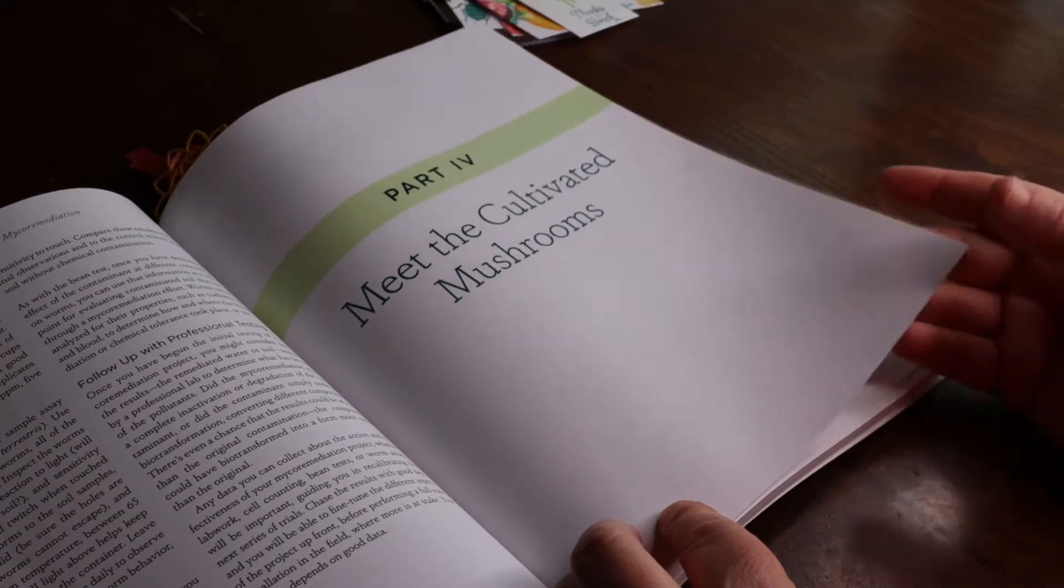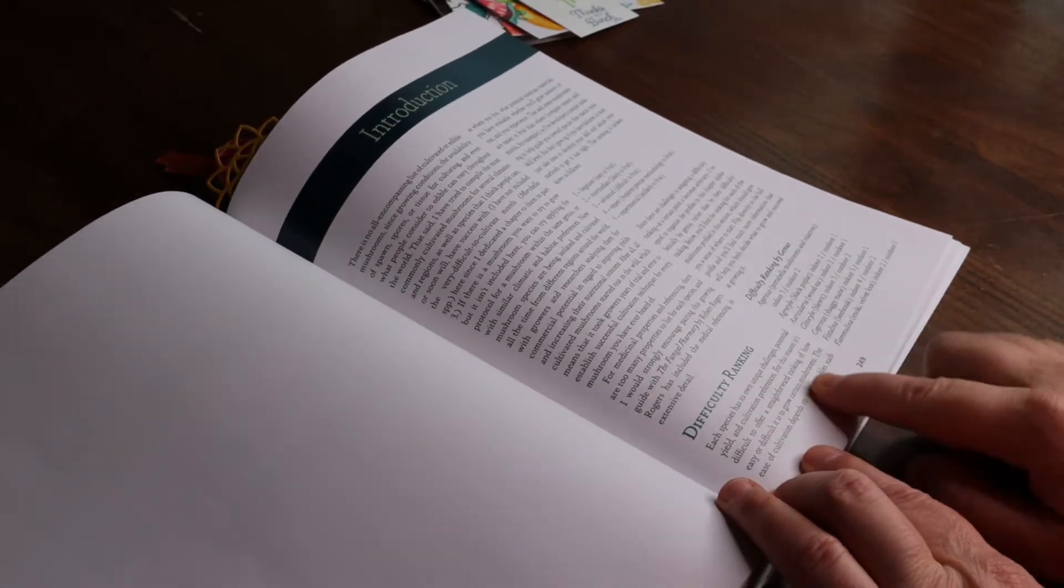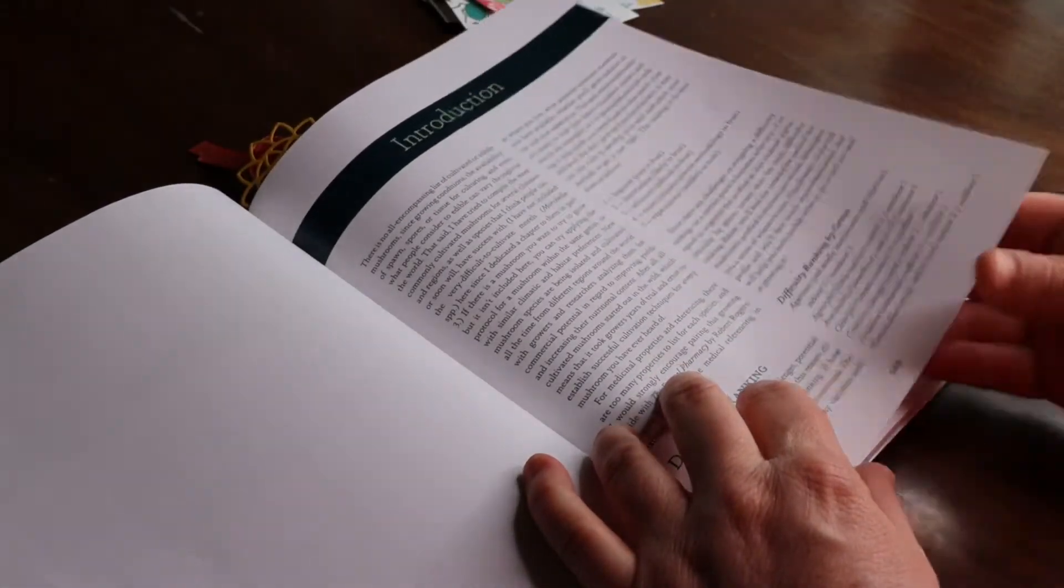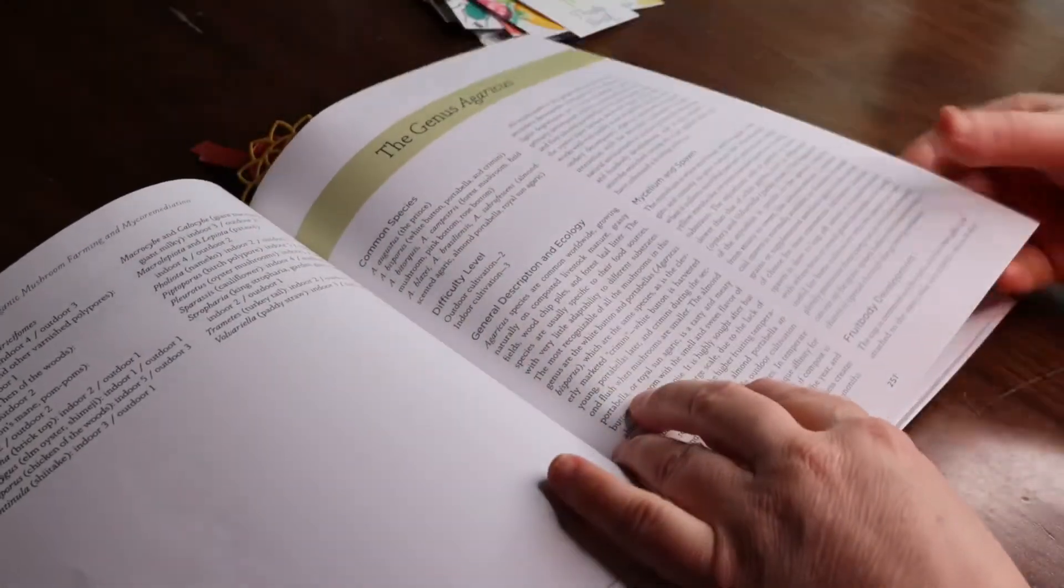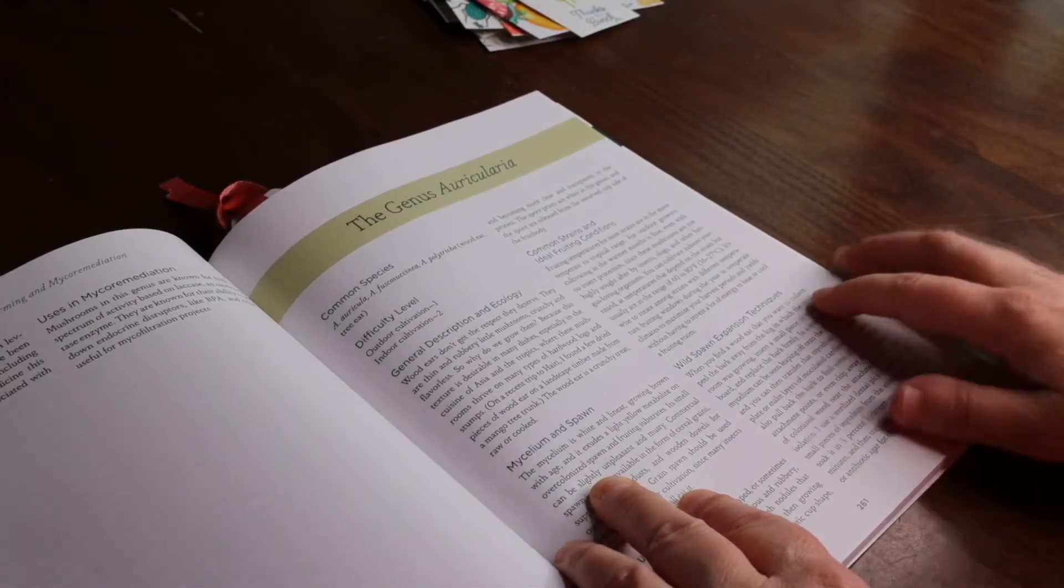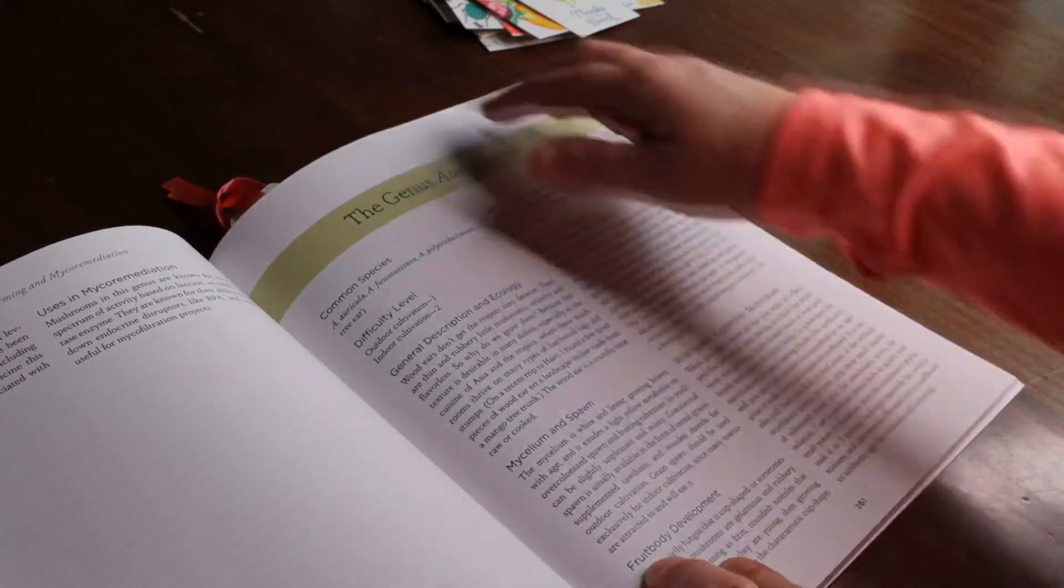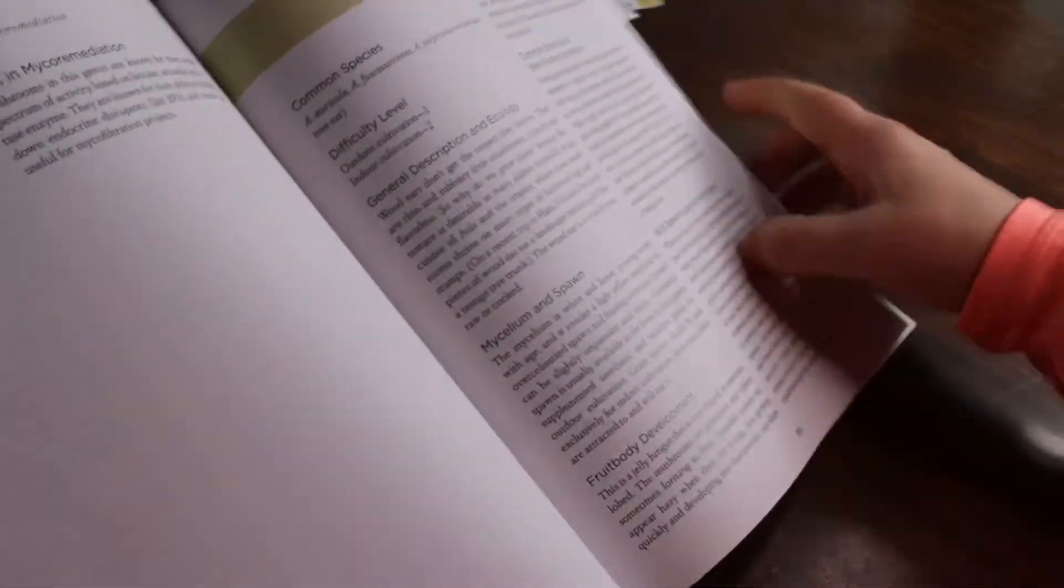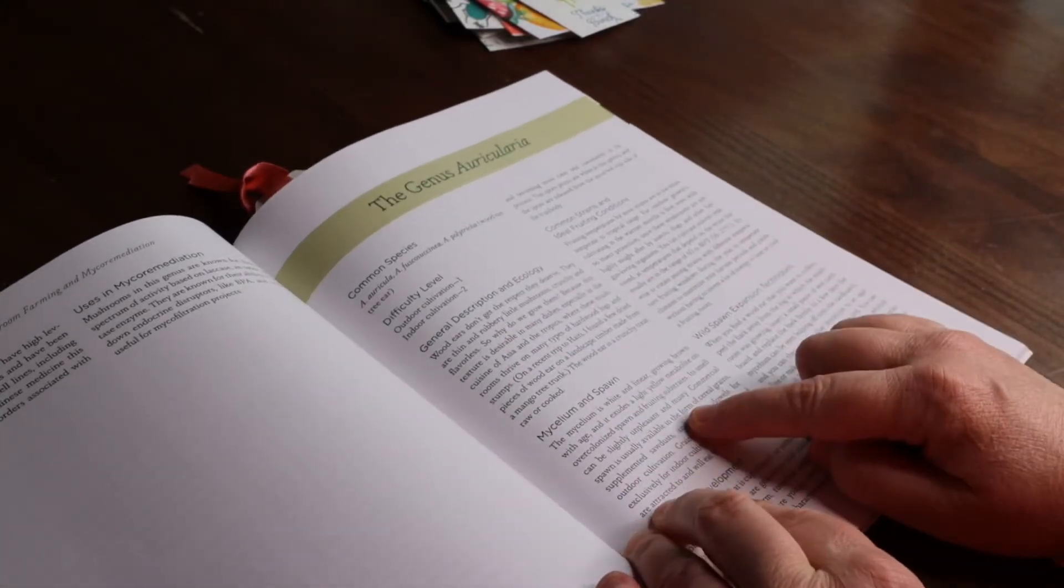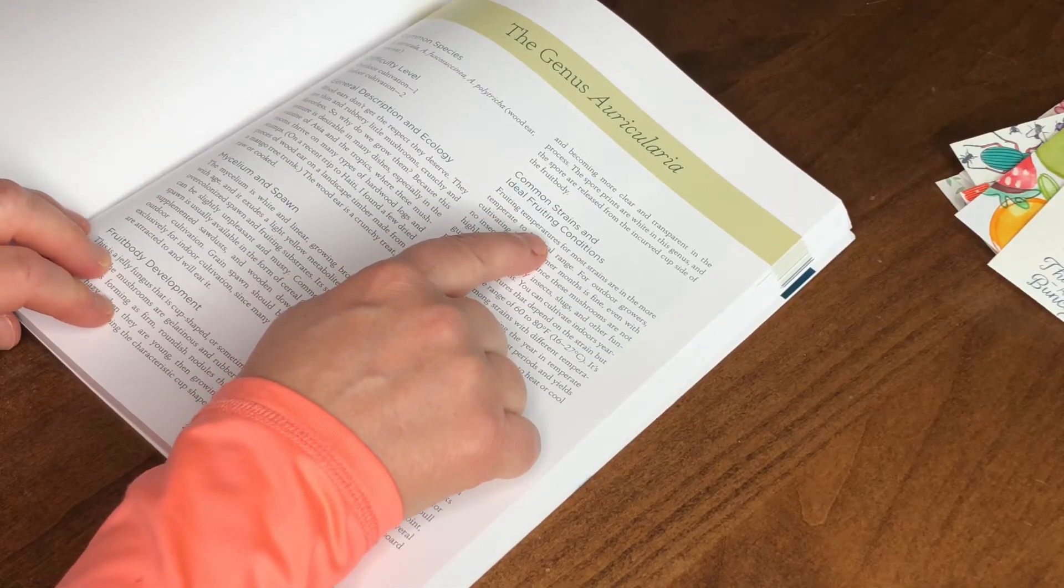His last section, Meet the Cultivated Mushrooms, is giving helpful information on how to grow and actually how difficult it is to grow specific mushrooms. He does a difficulty ranking by genus and then goes through each genus specifically. There are 24 genus types that he includes. So, for instance, the genus Auricularia. This is what he covers: the common species, so it's known as the wood ear or the tree ear. The difficulty level, so outdoor cultivation is a one, indoor cultivation is a level two, so those are fairly easy to cultivate. Then he gives a general description and ecology of each genus, the mycelium and spawn, fruit body development, common strains and ideal fruiting conditions.